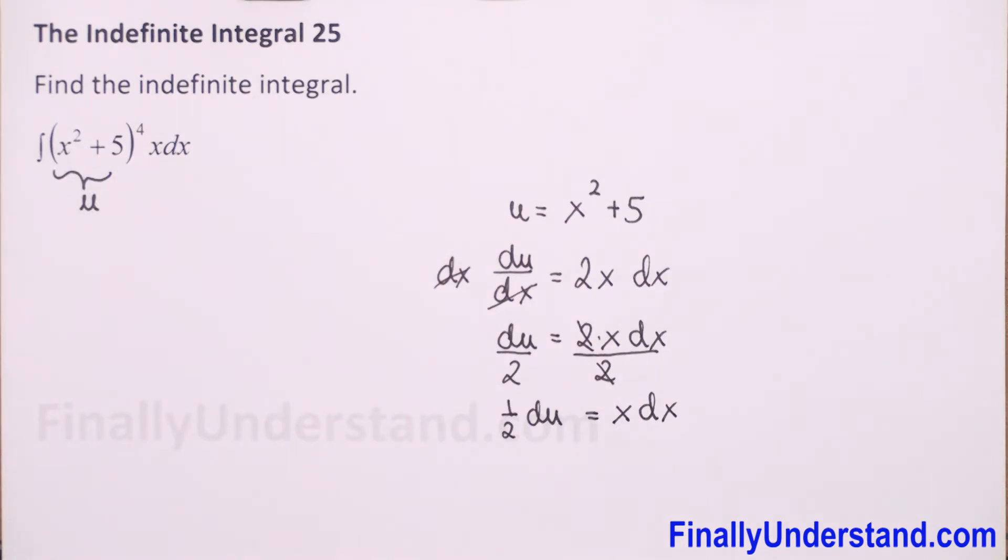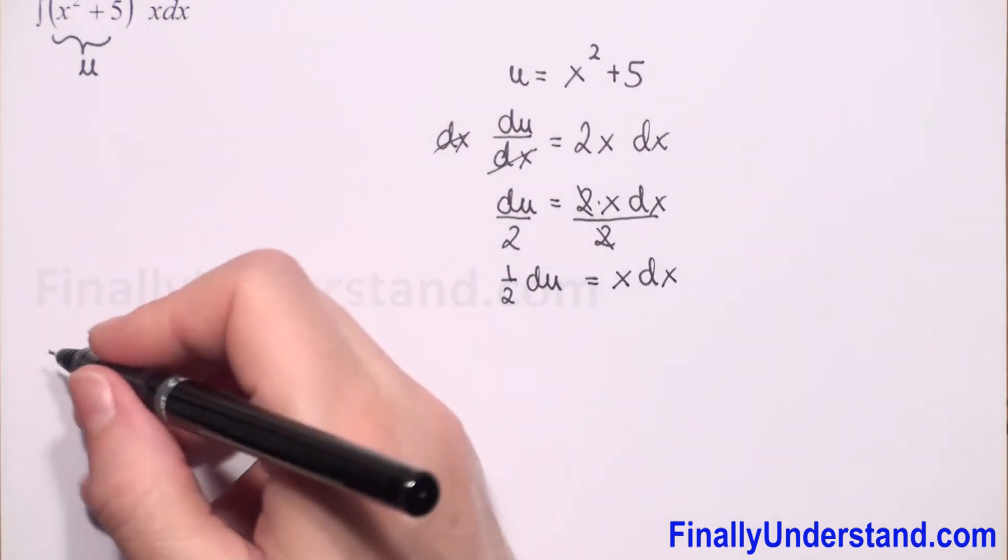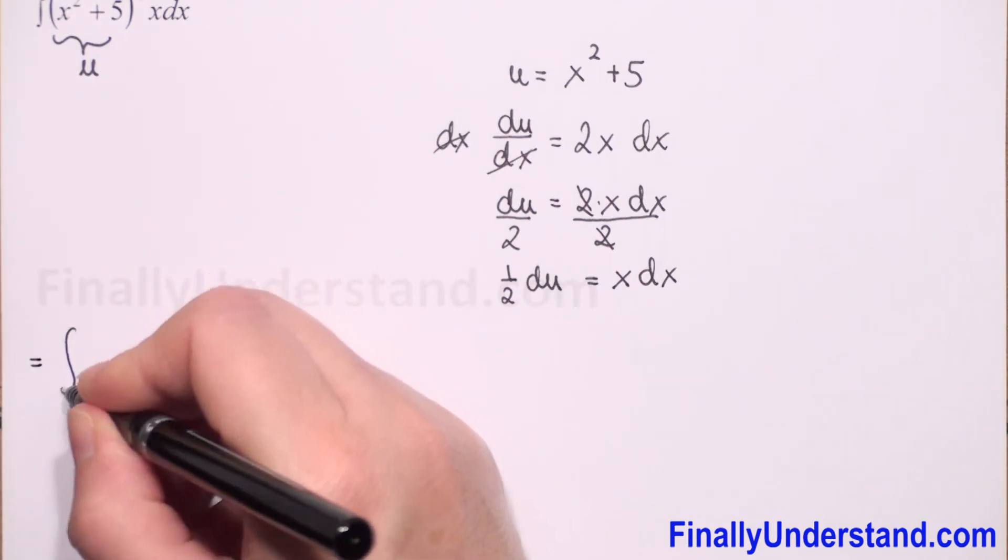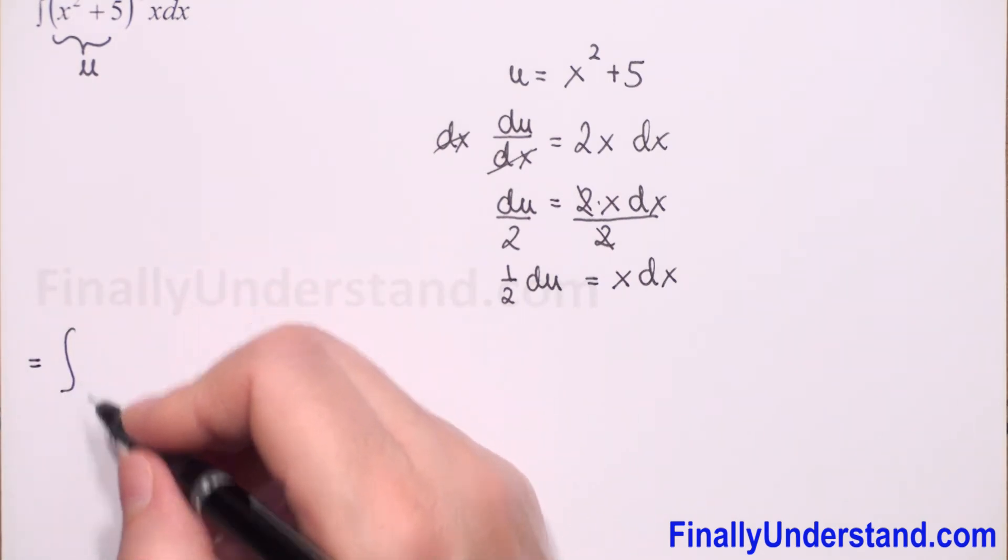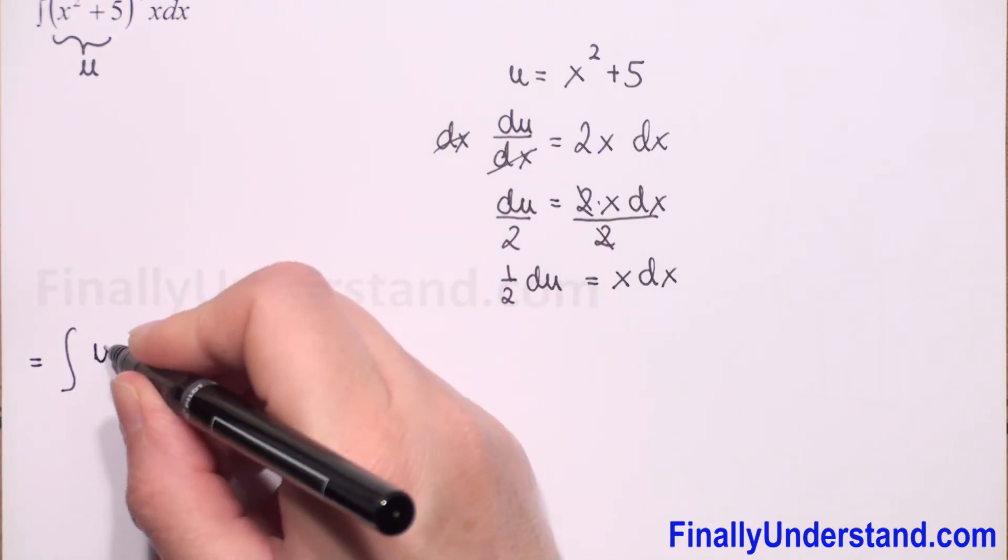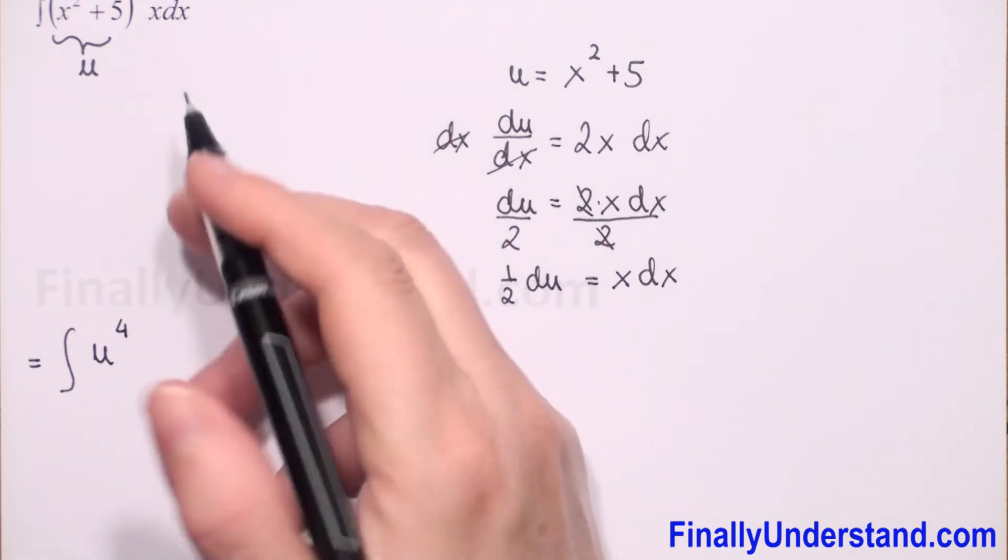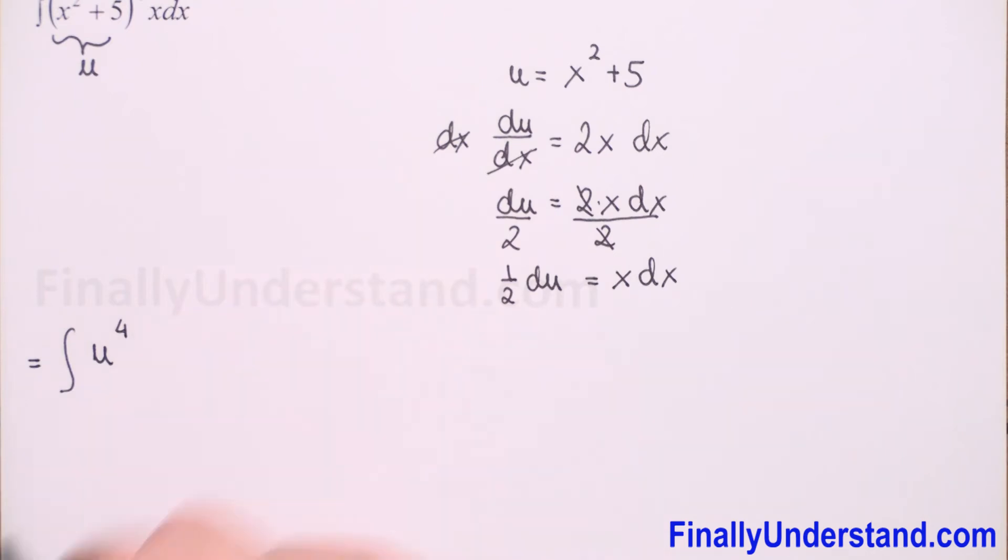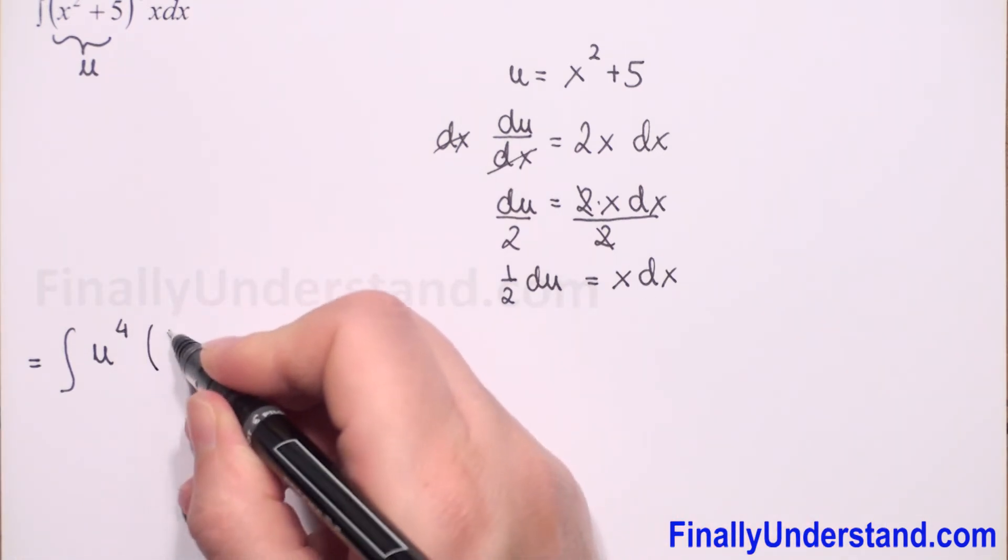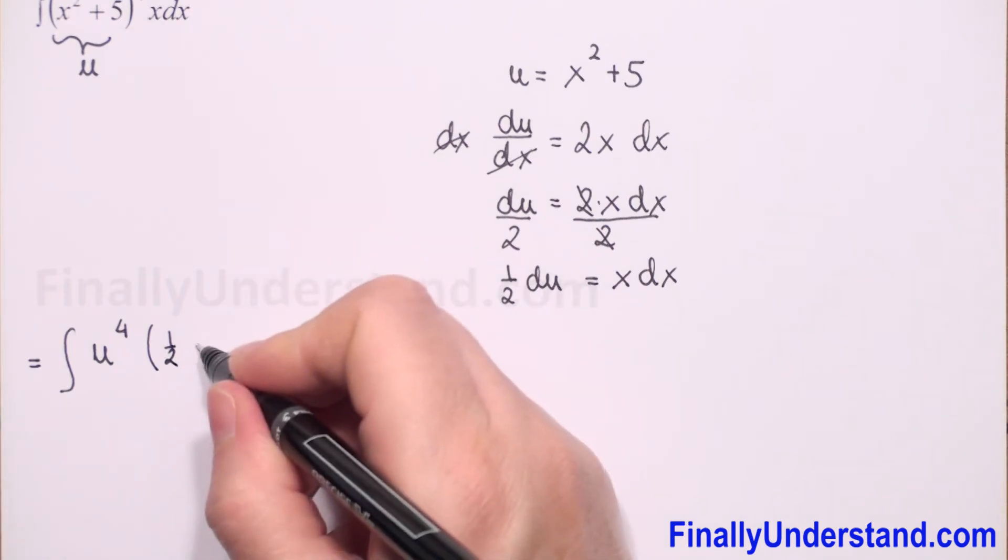So we have x dx and our expression in parentheses is u. So now we can rewrite our integral to integral with respect to u. And we have u to the power 4. Don't forget about the power. And we have x dx, which is one half du.